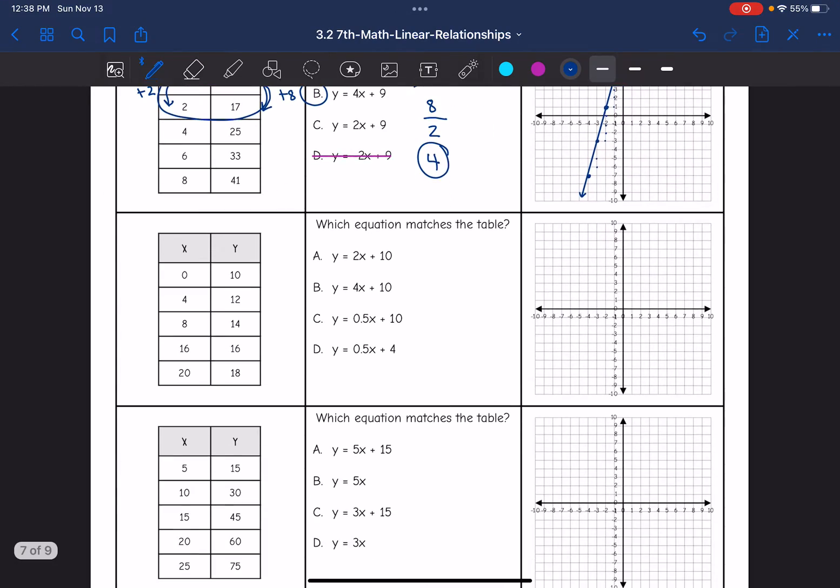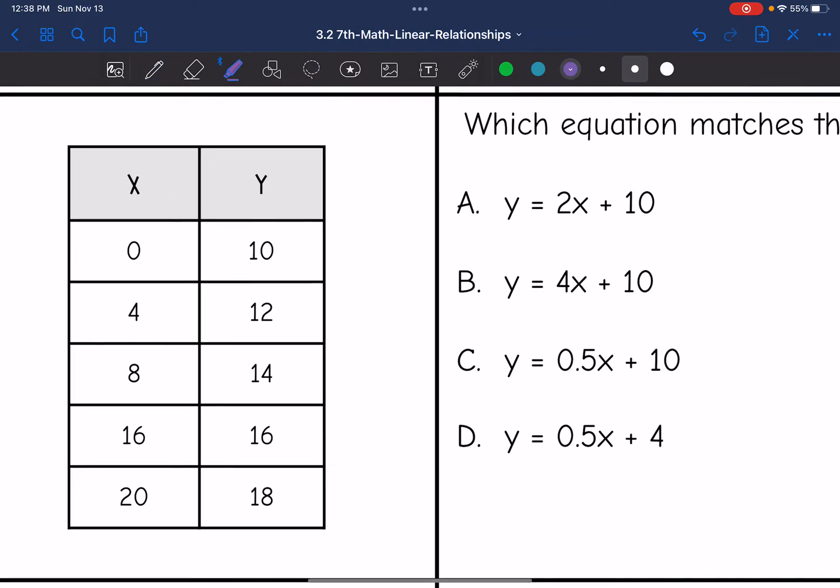Let's look at this next one. So I notice right away I have that 0, 10 point. That means my y-intercept is 10. So I can go ahead and eliminate answer choice D. And then all of my rate of changes are positive, which is good because I can see that I'm increasing.